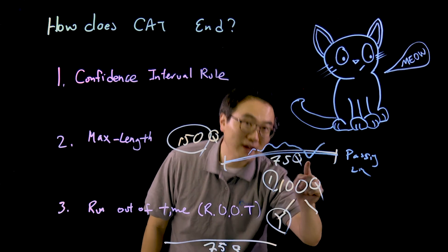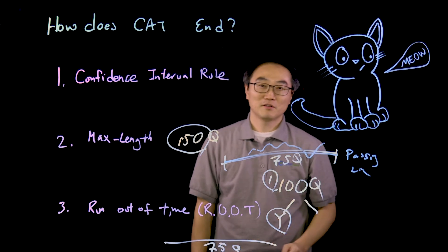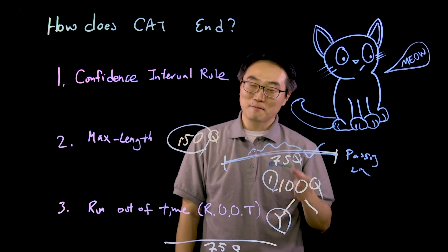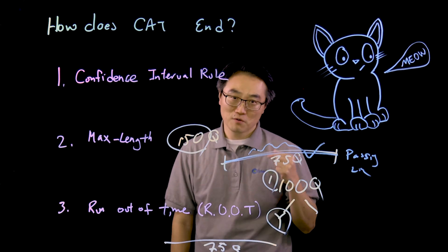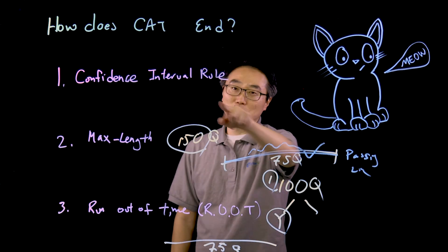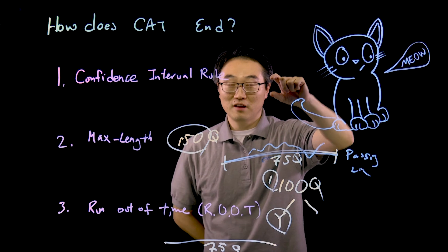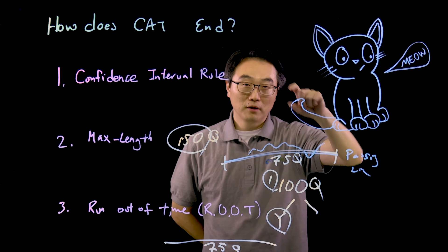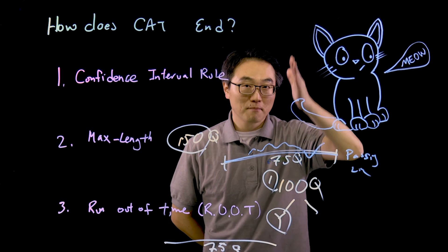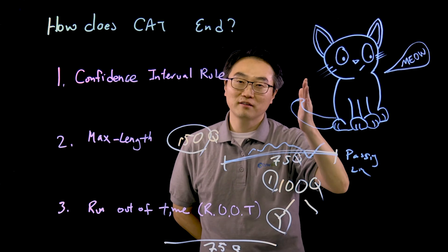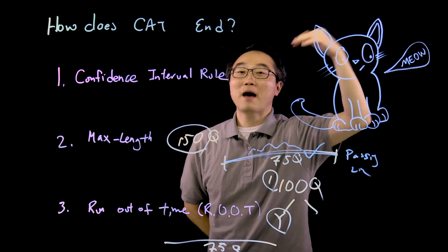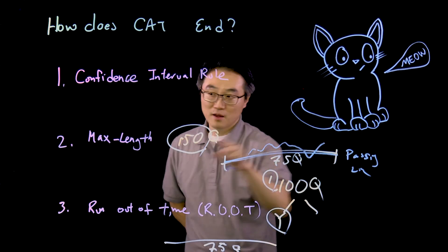If at all times you're above the passing line, then you pass. If you somehow even for one question you went below that, then you fail. Let's recap, because this is important and confusing. First, Confidence Interval Rule: when the interval is either above or below the passing line after you did the first minimal number of questions—for CISSP, 100 questions—you either pass or fail.